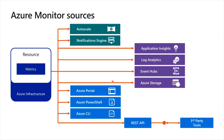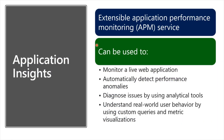All data collected by Azure Monitor fits into one of two fundamental types: metrics and logs. Metrics are numerical values that describe some aspect of the system at a particular point in time — lightweight and capable of near real-time scenarios. Logs contain different kinds of data organized into records. Telemetry such as events and traces are stored as logs. You can access this data through Application Insights, Log Analytics, Event Hubs, Azure Storage, the Azure portal, PowerShell, CLI, REST API, or third-party tools, and use it to drive auto-scaling and notifications.